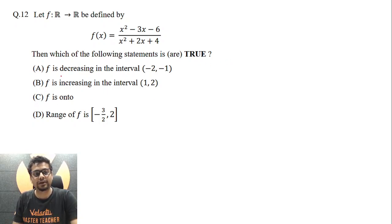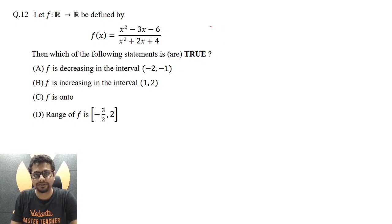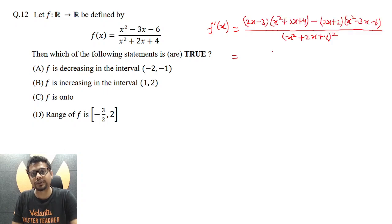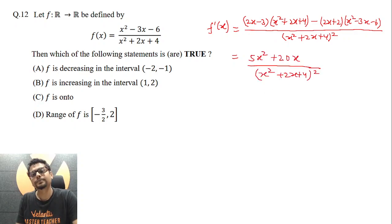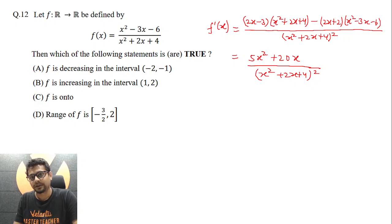Now to comment upon f being decreasing or increasing in respective intervals, let's differentiate. Using the quotient rule, f prime of x turns out to be a simplified expression where the denominator never becomes zero — in fact it is always positive.